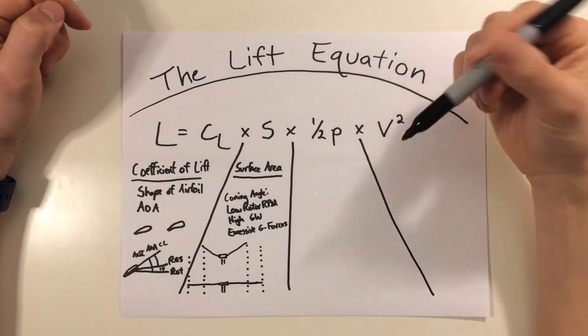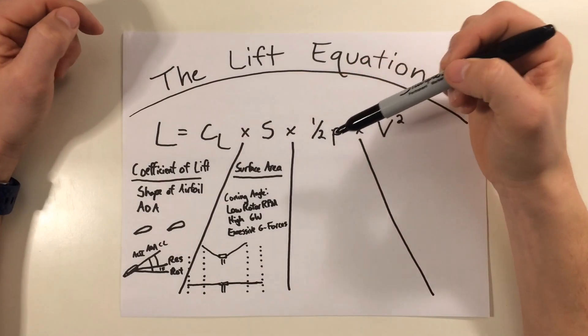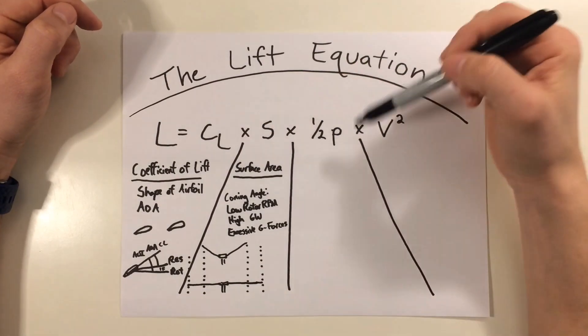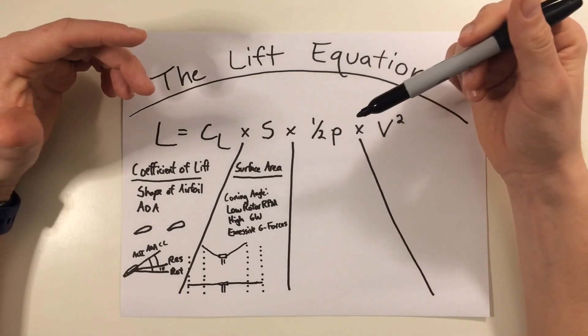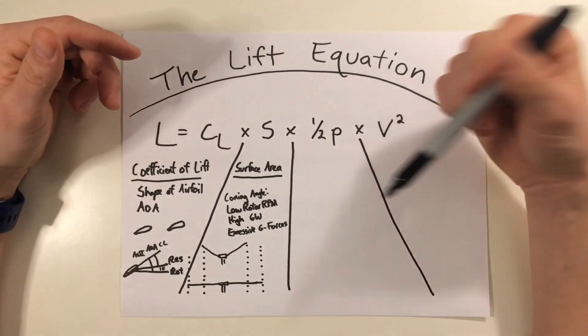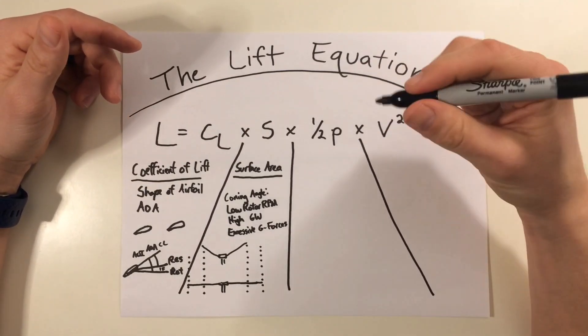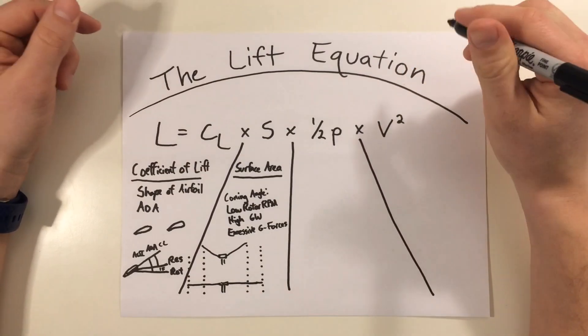Alright, so that concludes the first part of the lift equation. We talked about the coefficient of lift as well as the surface area. In the next video, I want to start to cover the air density as well as velocity squared, and kind of wrap all this up as far as what you can and cannot affect in the cockpit. Stay tuned. The next video should come up in the link, should be in the description as well. Thanks for watching.